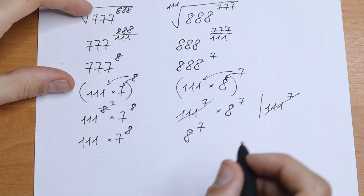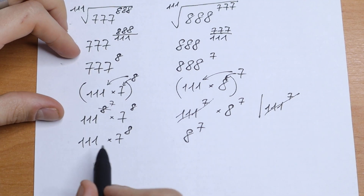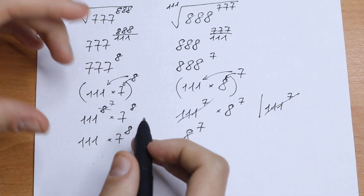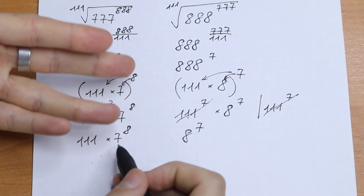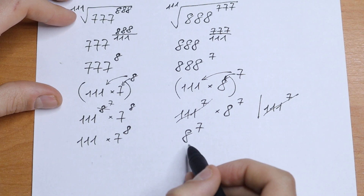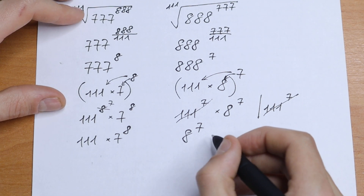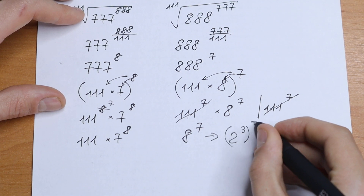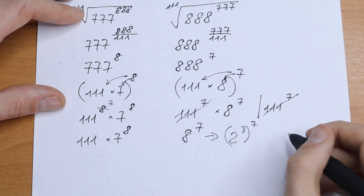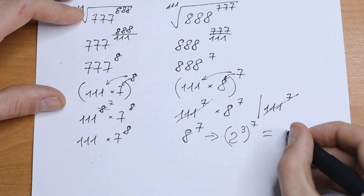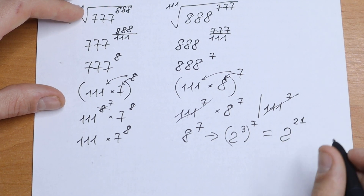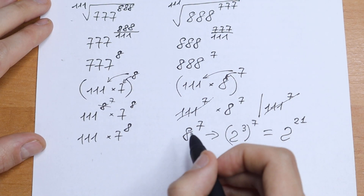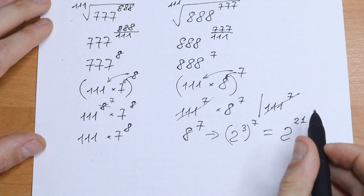It's a bit complicated to compare directly because 111 and 7 cannot be easily factored. But notice: 8 can be written as 2 cubed. So the right side becomes 2 cubed raised to the 7th power, which simplifies to 2 to the power 21. Let's work with powers of 2.